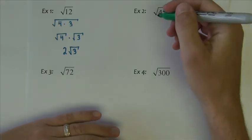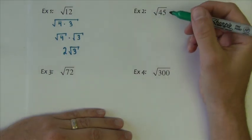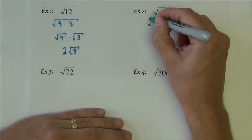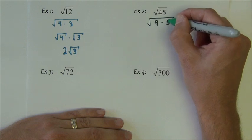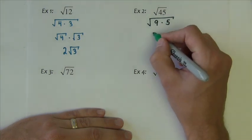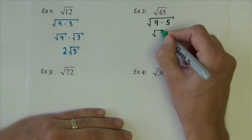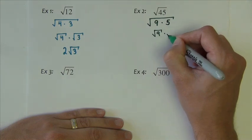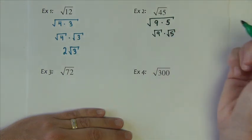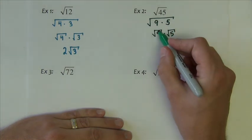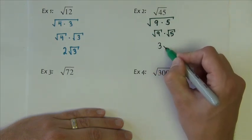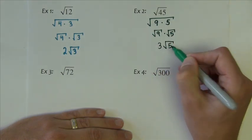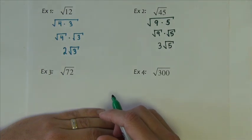The next one, square root of 45. Again, I begin with two numbers that multiply to 45. Use 9 times 5. That becomes square root of 9 times square root of 5. The square root of 9 right here is our perfect square. Square root of 9 is 3. And we keep that square root of 5. 3 square root of 5.